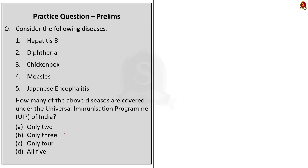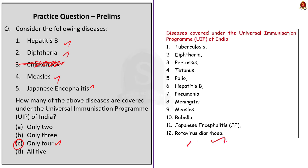The second question asks how many of the five given diseases are covered under the Universal Immunization Program of India. As discussed, chickenpox is not yet covered under India's Universal Immunization Program. The rest of the four diseases are covered under it. The correct answer is option C, only four. The diseases covered under the Universal Immunization Program of India are displayed here.